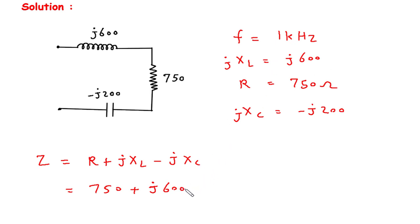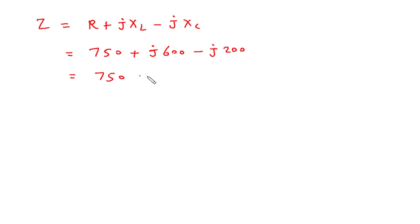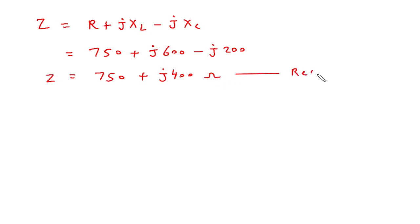So it will be J600 minus J200. In place of XC, only 200 will be there. Now we have the values of JXL and JXC. We will simplify this further: it will be 750 plus J(600 minus 200), which gives J400. So this is the value of total impedance Z in ohms — this is the rectangular form.